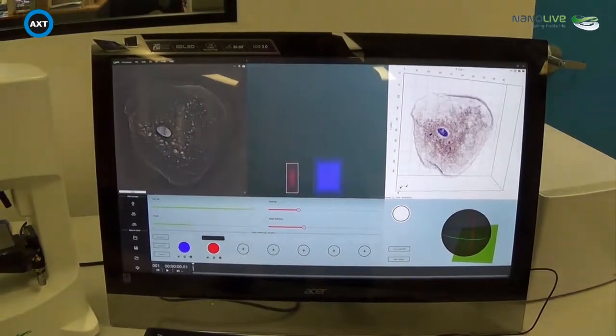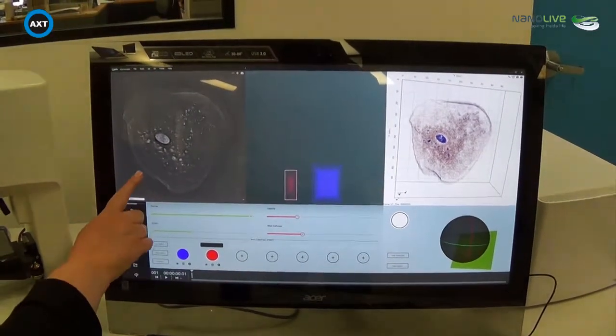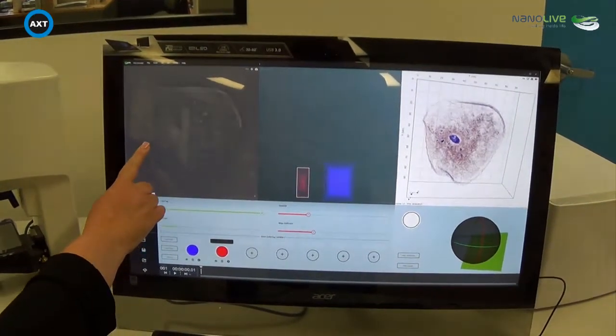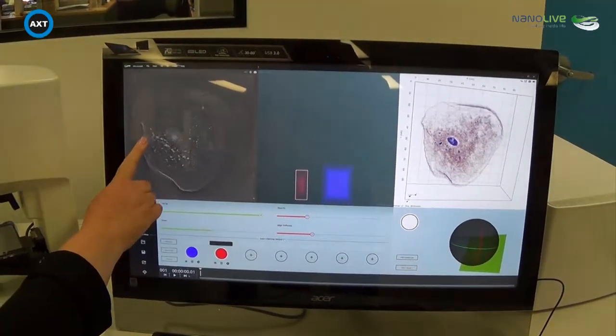On our touch screen, we can also go through the slices simply by moving through up and down on the screen to go through the slices as well.